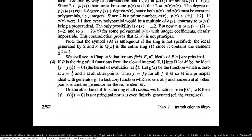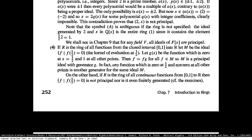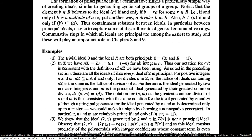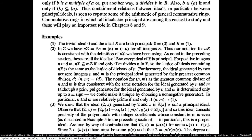Let's see a few examples. The trivial ideal, that is zero, and the unit ideal, that is R itself, are both principal ideals. You can generate zero from just taking zero, and you can generate R from taking the ideal generated by one. The ideal generated by the multiplicative identity will just contain all the R multiples of one, and that is the ring R itself.